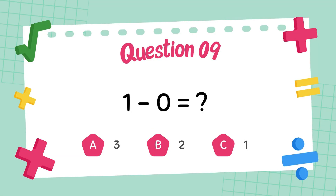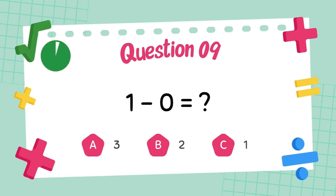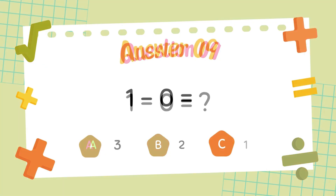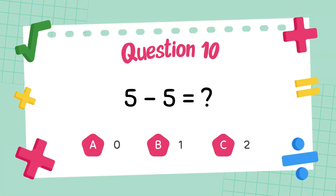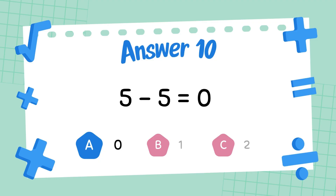What is 1 minus 0? The answer is 1. What is 5 minus 5? The answer is 0.